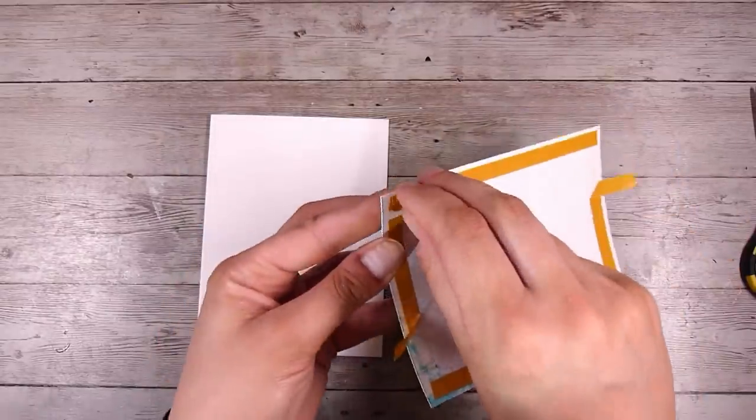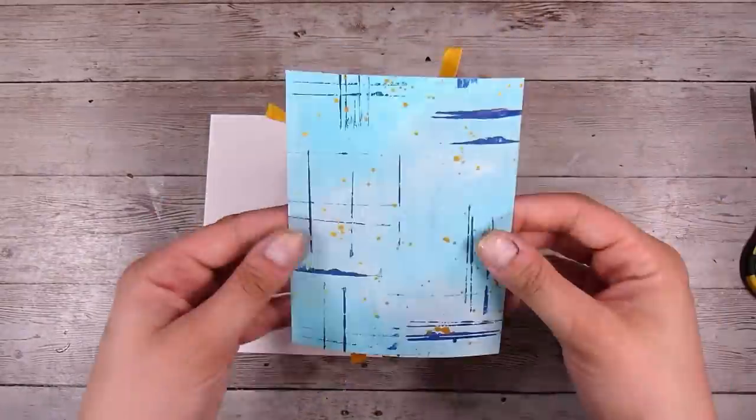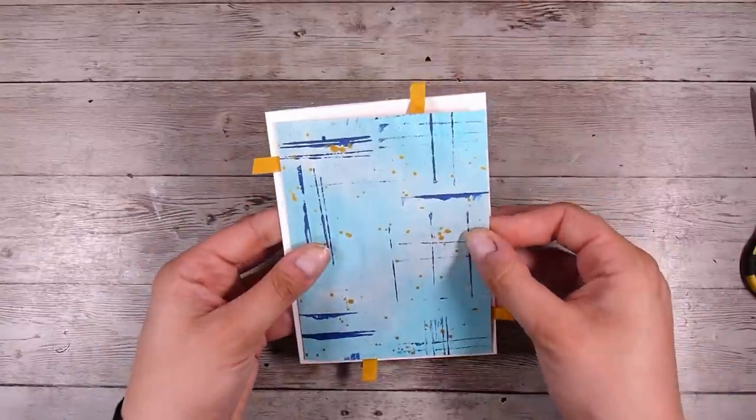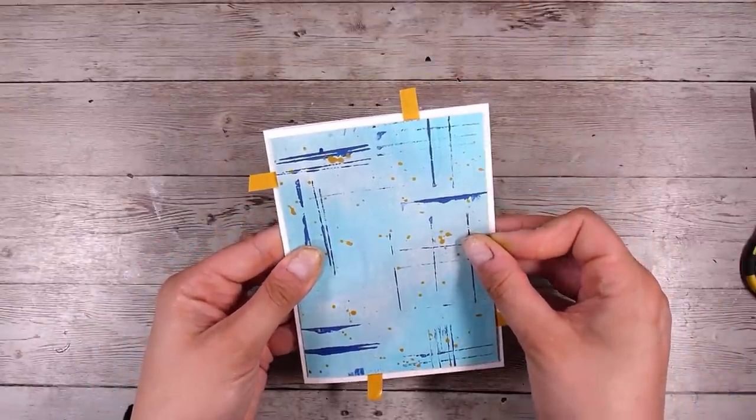I do get asked a lot why I don't trim at first before I add all the color, and that is purely so that I can kind of choose the best portion of the card that I would like to keep and I can trim off anything off the sides that didn't work out quite the way I thought I wanted it to.